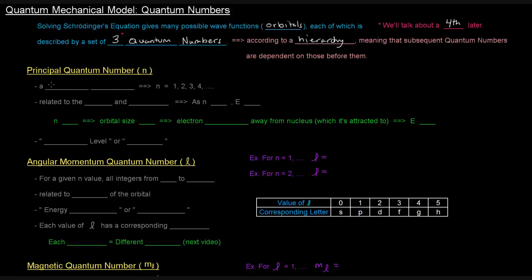The first quantum number is the principal quantum number, represented by lowercase n. The principal quantum number is a positive integer, so we start with n equals 1, then n equals 2, n equals 3, n equals 4, and so on. The principal quantum number is related to the size and energy of the orbital — as n increases, the energy increases.